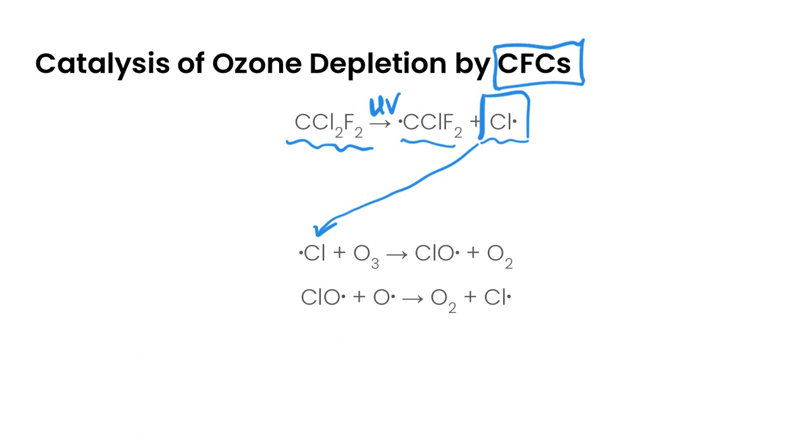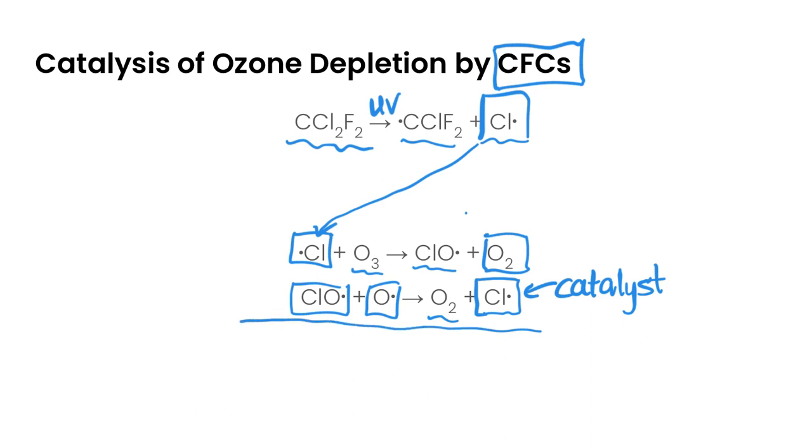So chlorine free radicals can react with ozone, breaks it down and creates the ClO free radical and oxygen. And then the ClO free radical will react with another oxygen free radical, and that's going to create oxygen and then it's going to regenerate this chlorine free radical. So we actually say that that is the catalyst here because it is being used up and then it is being generated. So if we were to take a look at the net reaction between these two, if we were to add them up and get rid of anything that's common between both sides, this is taking ozone...